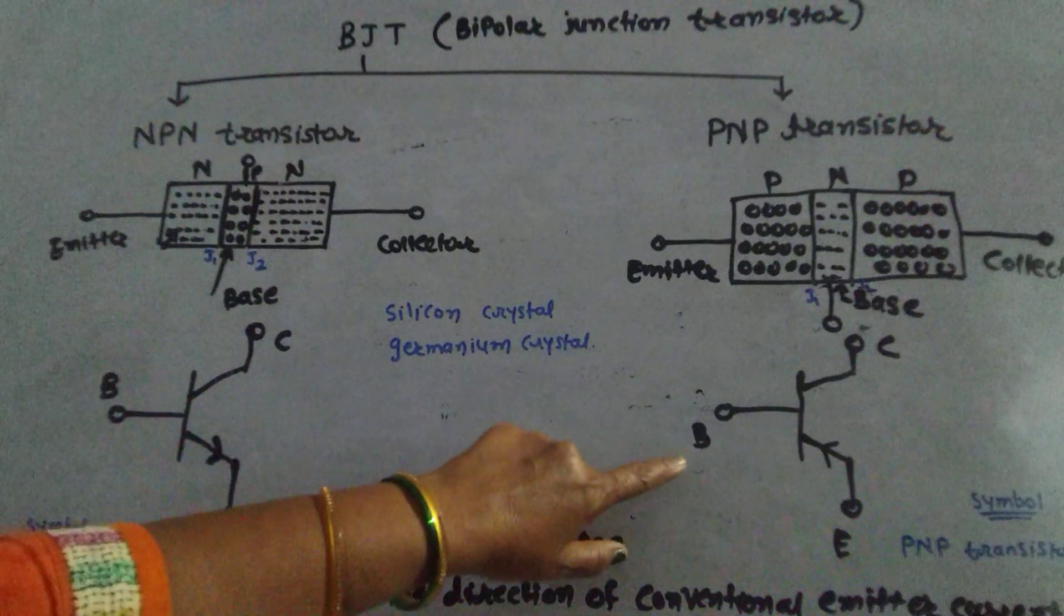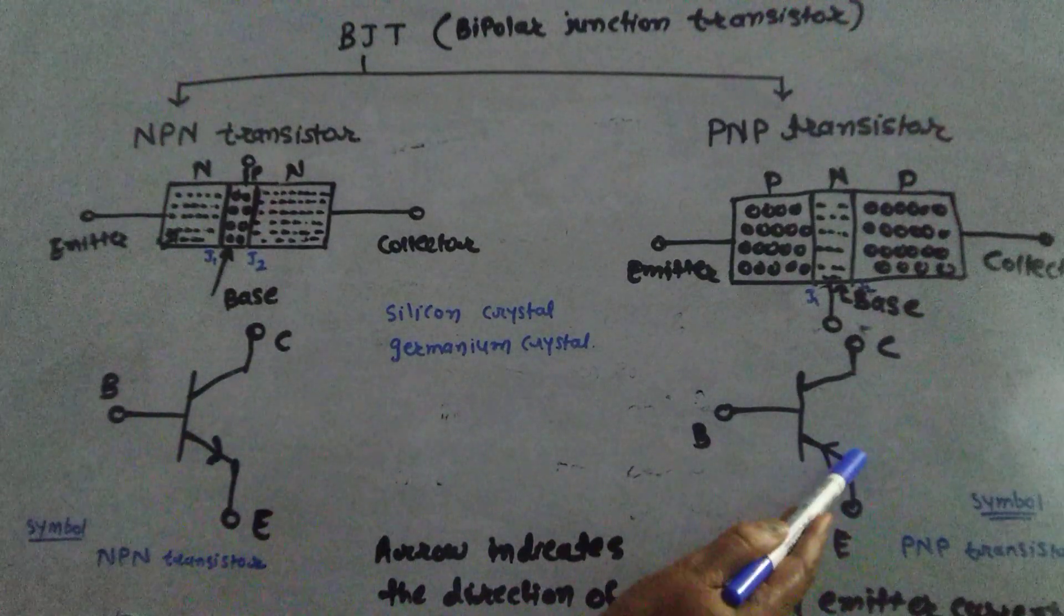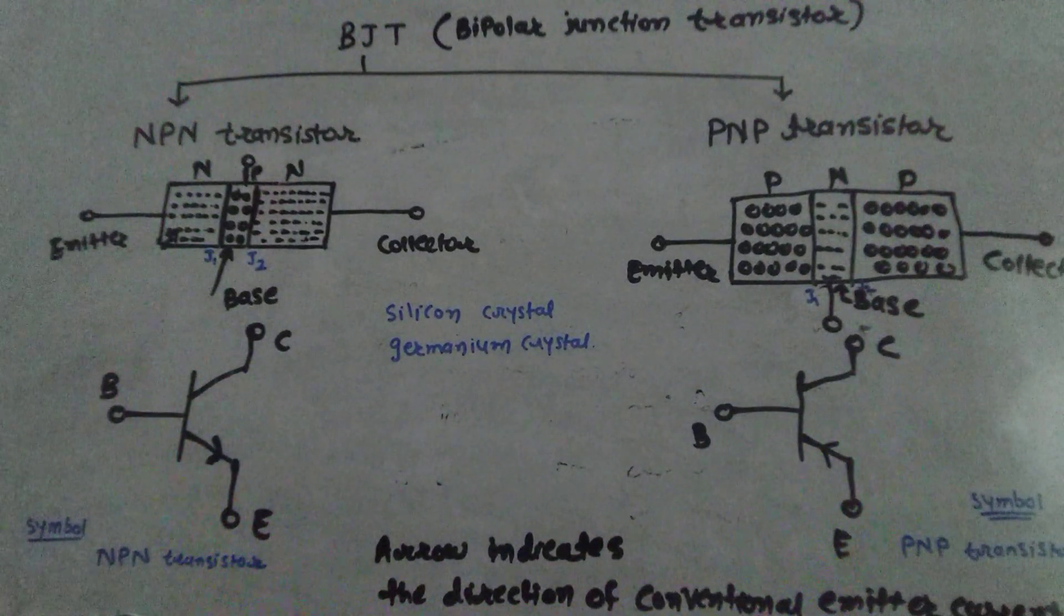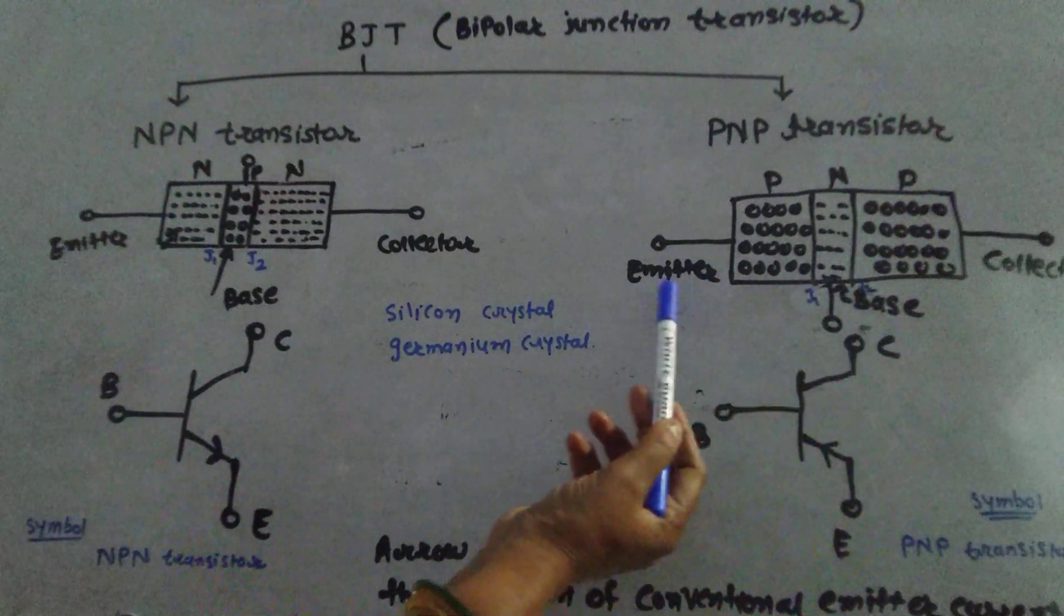And here this is PNP transistor, where the symbol of PNP transistor is like this, arrow is inside. PNP transistor also has two junctions, J1 and J2, and three terminals: emitter, base, and collector.